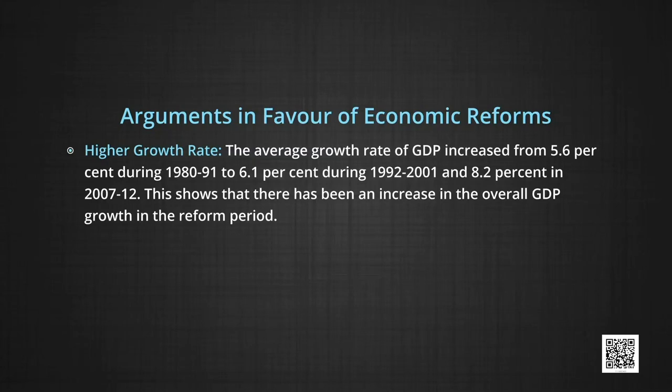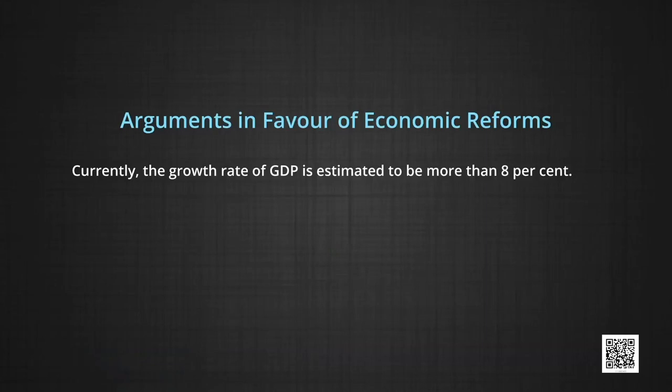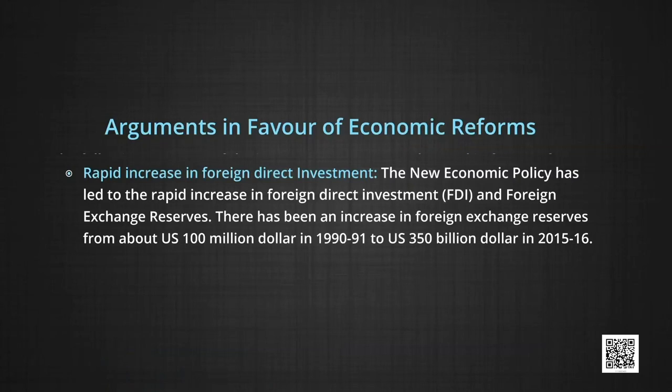This shows that there has been an increase in overall GDP growth in the reform period. During this period, the growth of agriculture and industrial sectors has declined, whereas the growth of the service sector has gone up. This indicates that growth is mainly driven by the service sector. Currently, the growth rate of GDP is estimated to be more than 8 percent. Number 2, rapid increase in foreign direct investment. The new economic policy has led to a rapid increase in FDI and foreign exchange reserves — from about 100 million US dollars in 1991 to US dollar 350 billion in 2015-16.